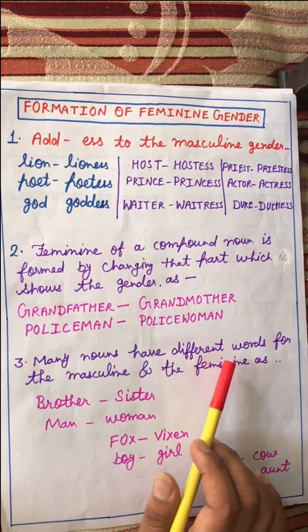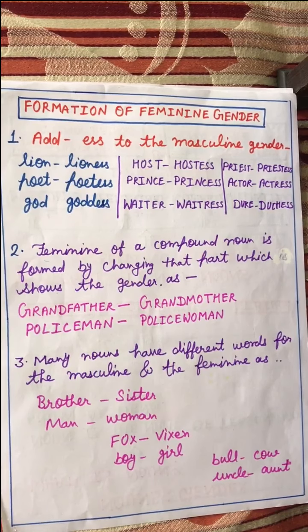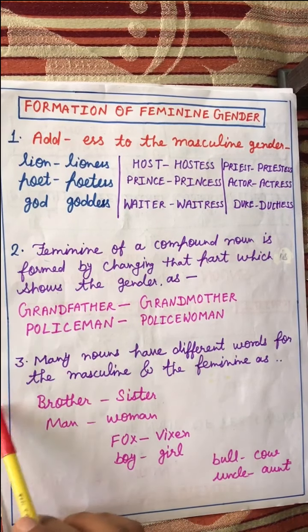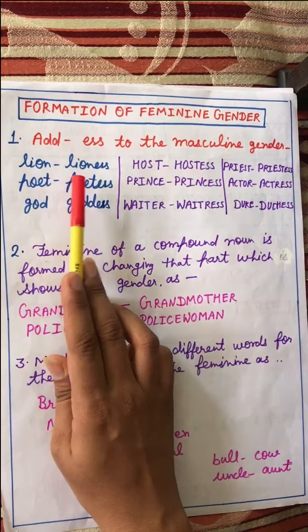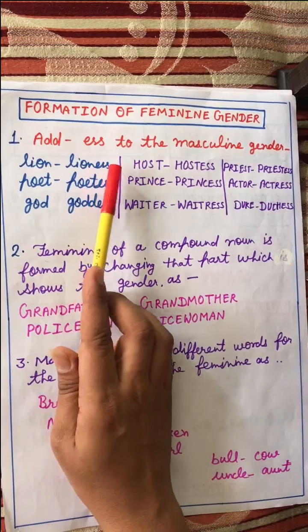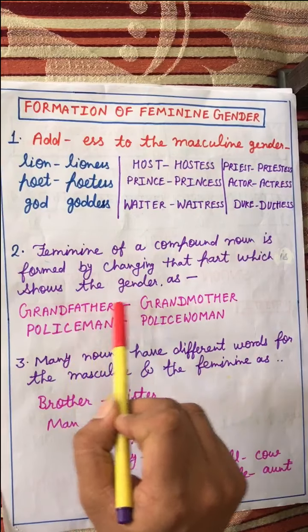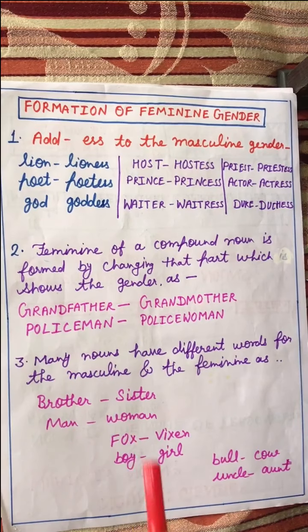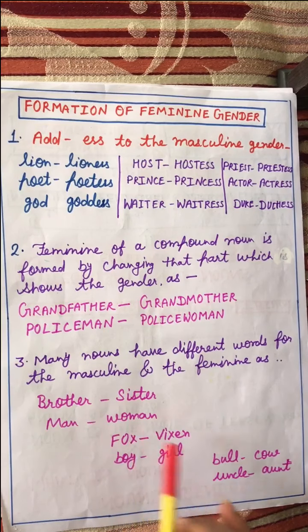Many nouns have completely different words for the masculine and feminine. For example: lion and lioness — in this case both words change completely. Father and mother are different words. Brother — B.R.O.T.H.E.R. — nothing is added; instead a completely new word, sister, is used for the feminine. These pairs are entirely different spellings.